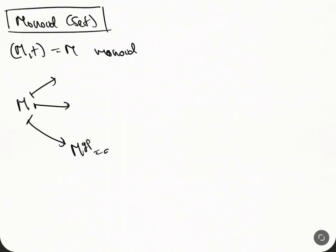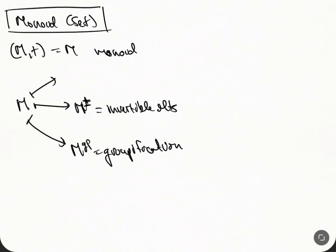The first is the groupification. Here, this is M^{+/-} — that's a superscript plus-minus — so this is taking invertible elements, or units. Both the groupification and taking units start in the world of monoids and end up in the category of groups.